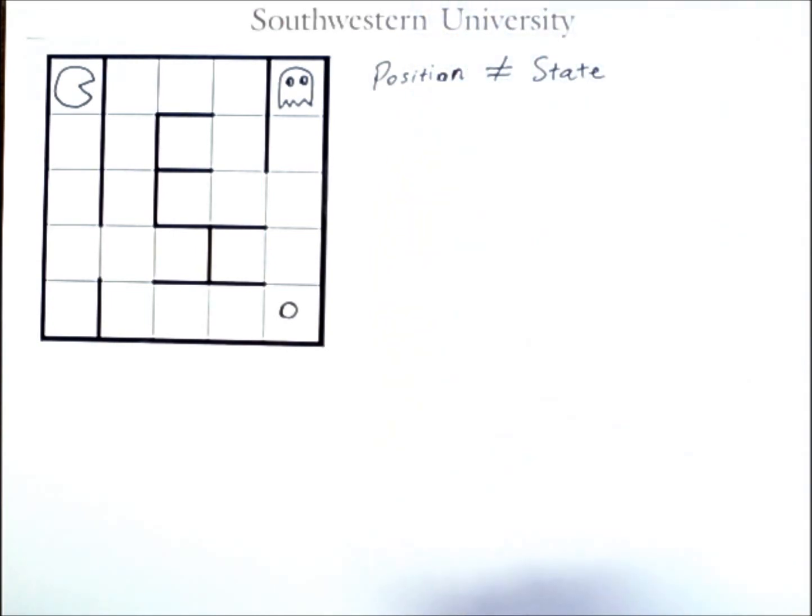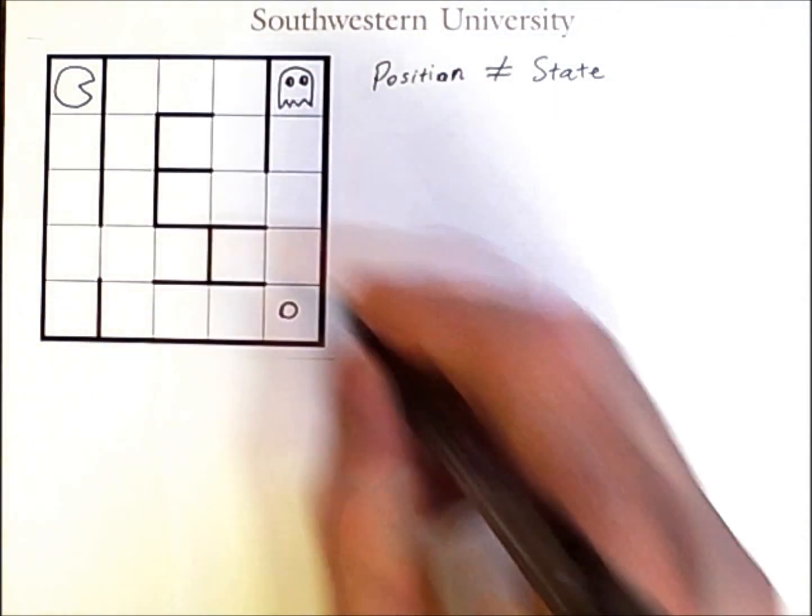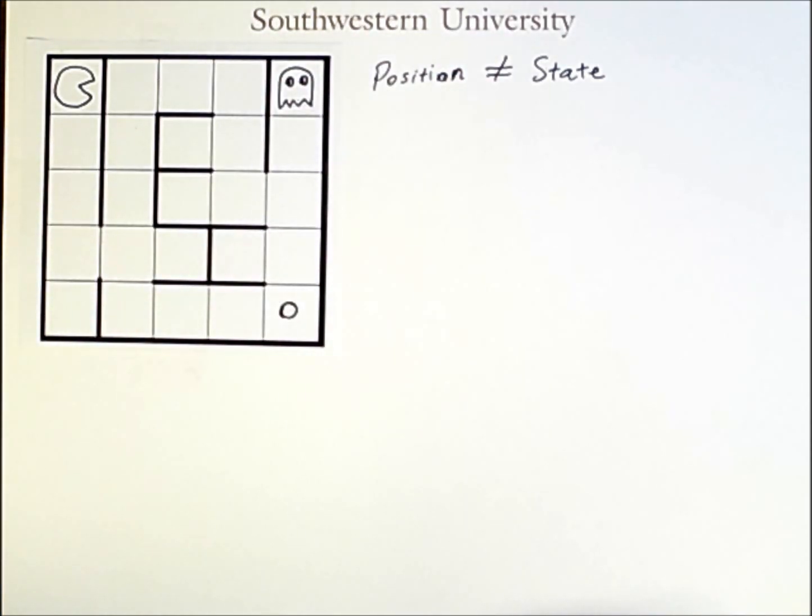Now, the way a search algorithm works is by going through states of the world. If there is a single agent in a maze that never changes, then you can use the position to reconstruct the state. However, the state, in reality, encompasses the entirety of the world that the agent inhabits.